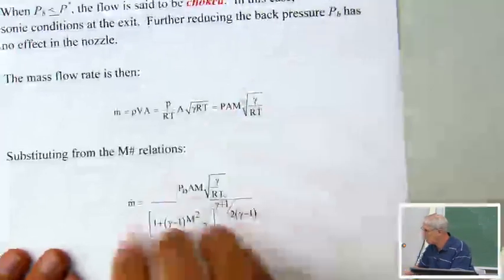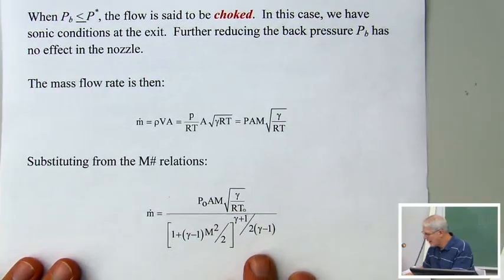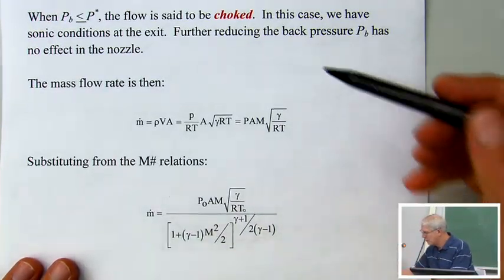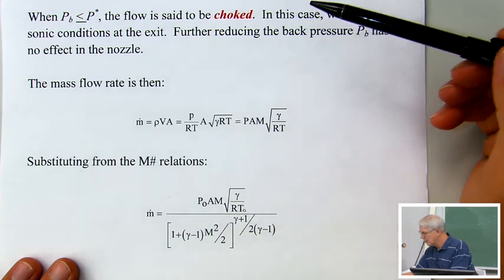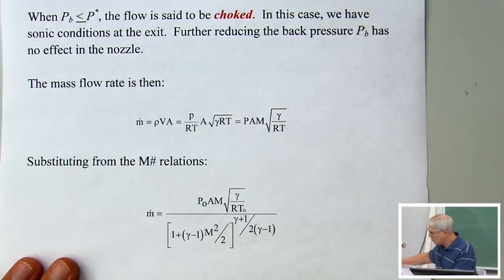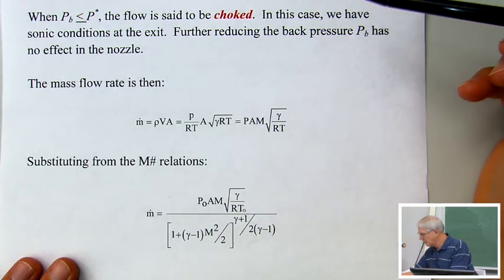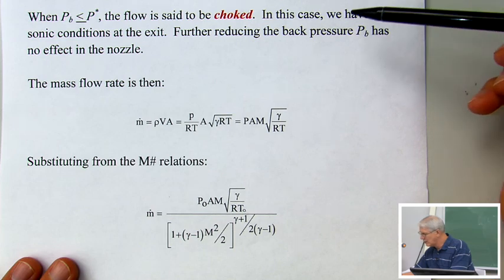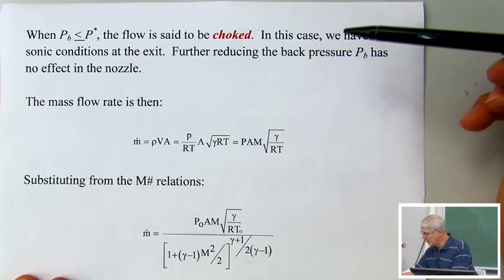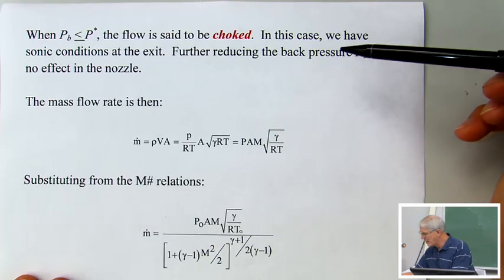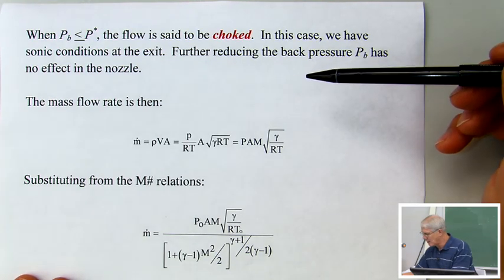When the back pressure is less than or equal to P star, we refer to this condition as choked flow. In this case, we have sonic conditions at the exit, and any further reduction in the back pressure has no effect in the nozzle.